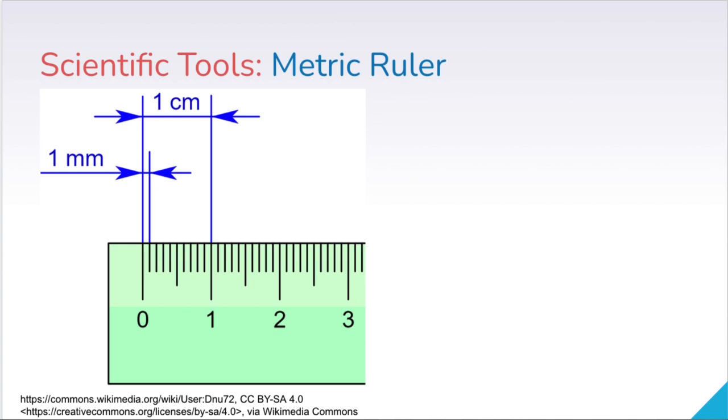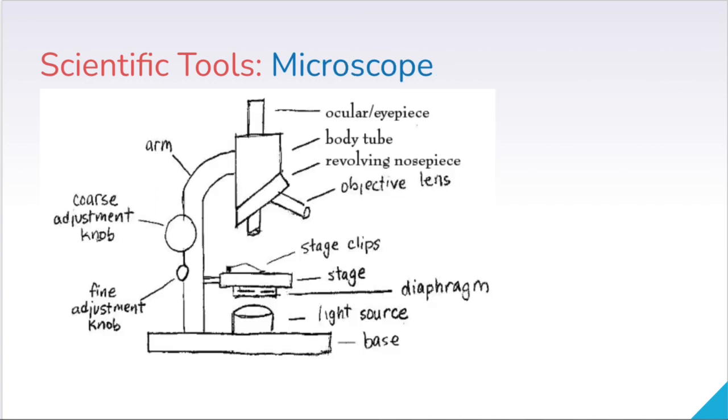You also want to make sure you read measurements with a metric ruler. These are centimeters and millimeters. You'll generally be given a diagram if you're asked to read a measurement on a metric ruler on the regents exam. Make sure you know that each of the little small tick marks on a ruler with centimeters are one millimeter. There's 10 millimeters in one centimeter. Make sure you familiarize yourself with the different parts of a microscope as well.